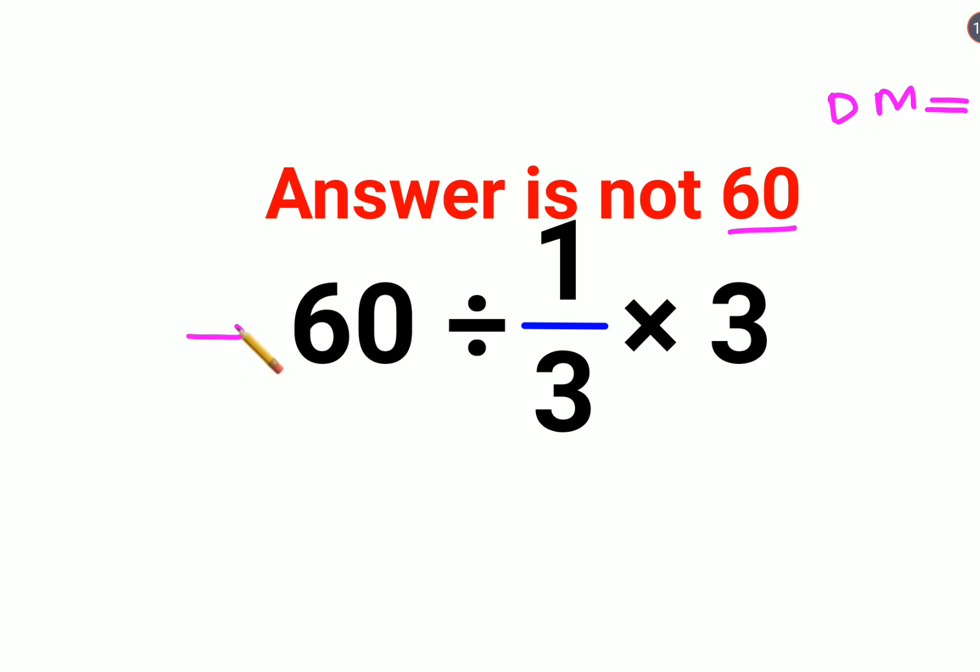So in these kind of sums, when you have just division and just multiplication, in that case what you should do is always go from left to right. This is something which is followed universally.